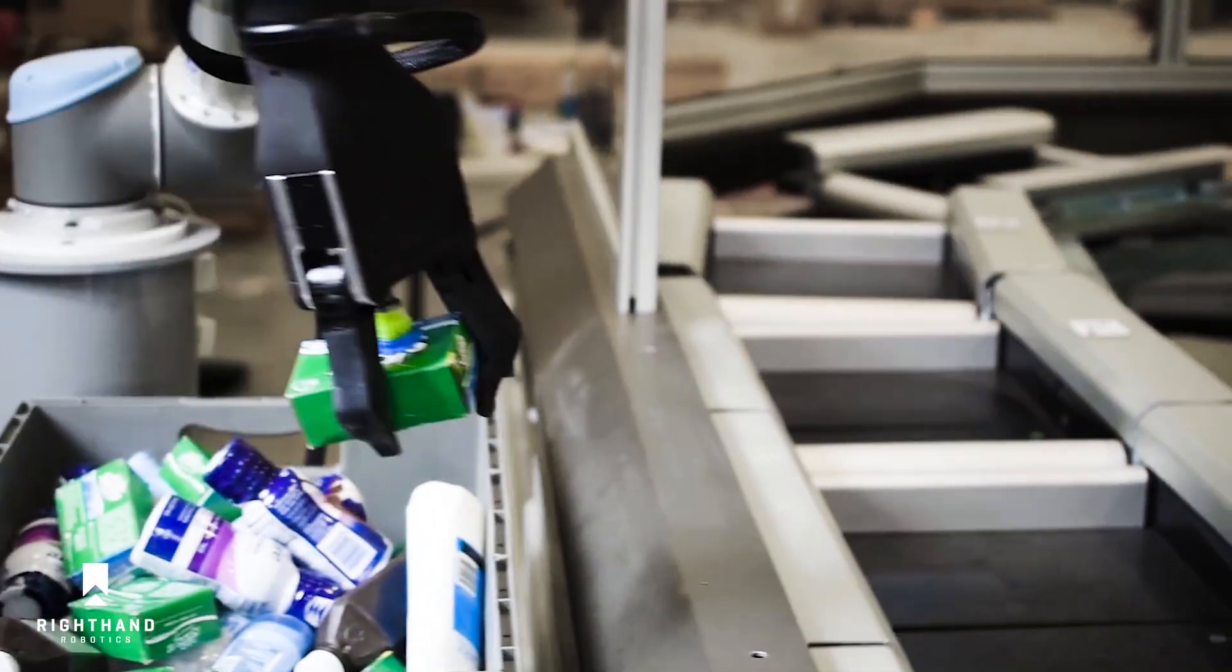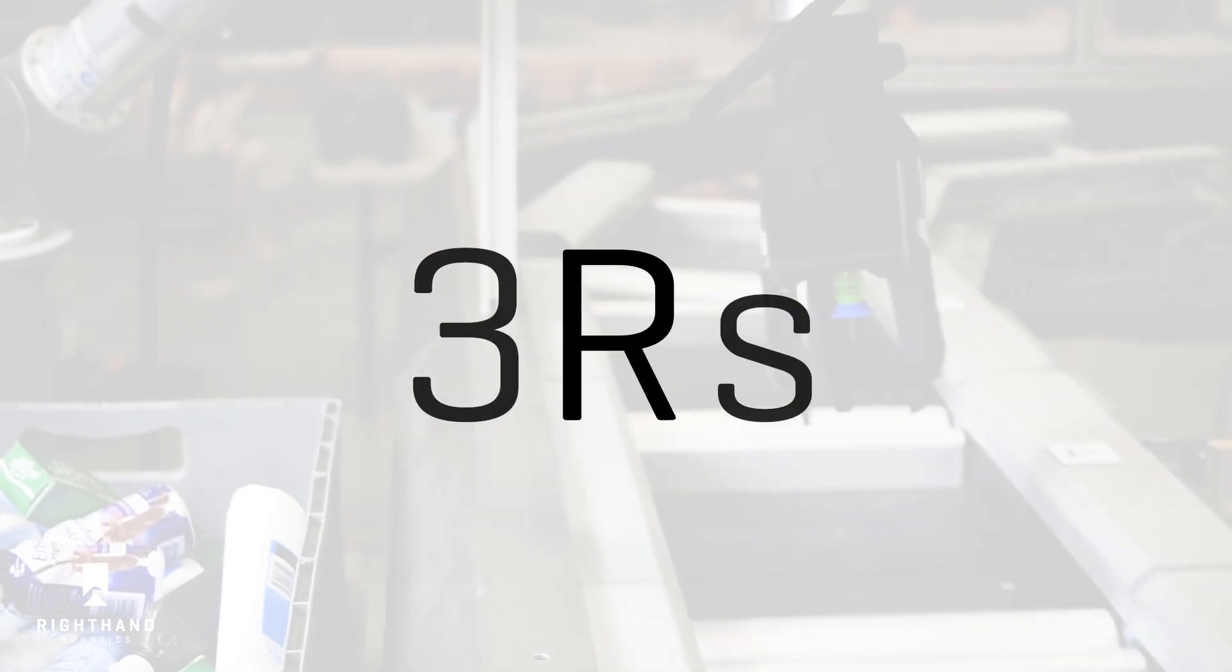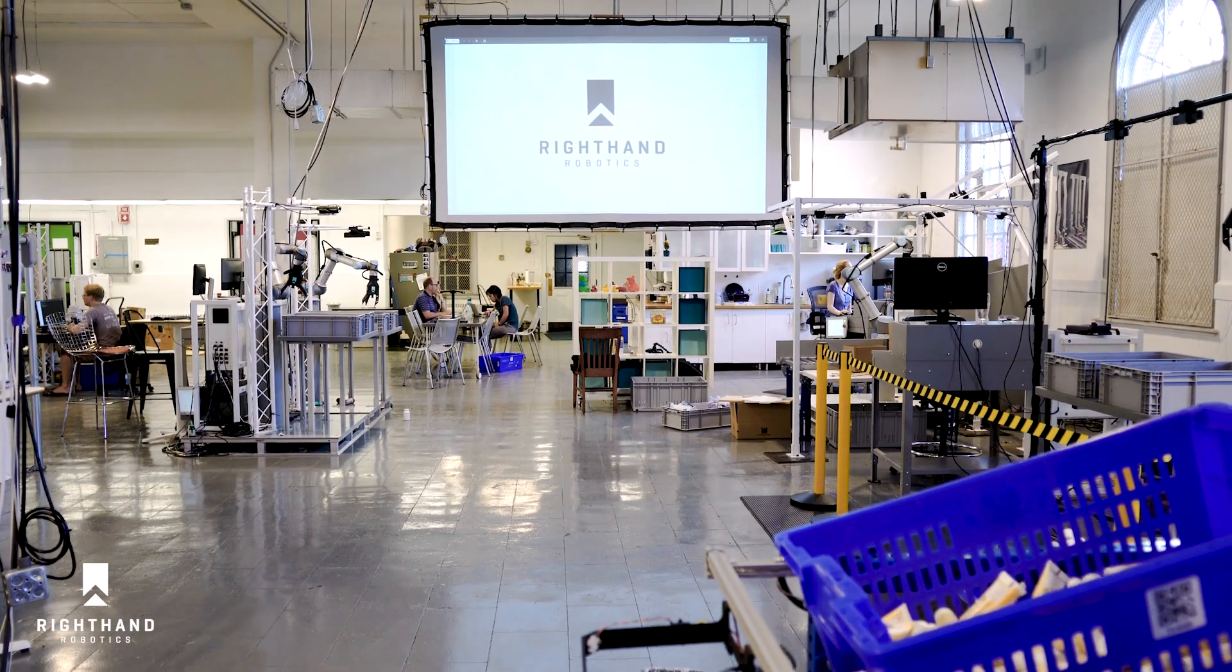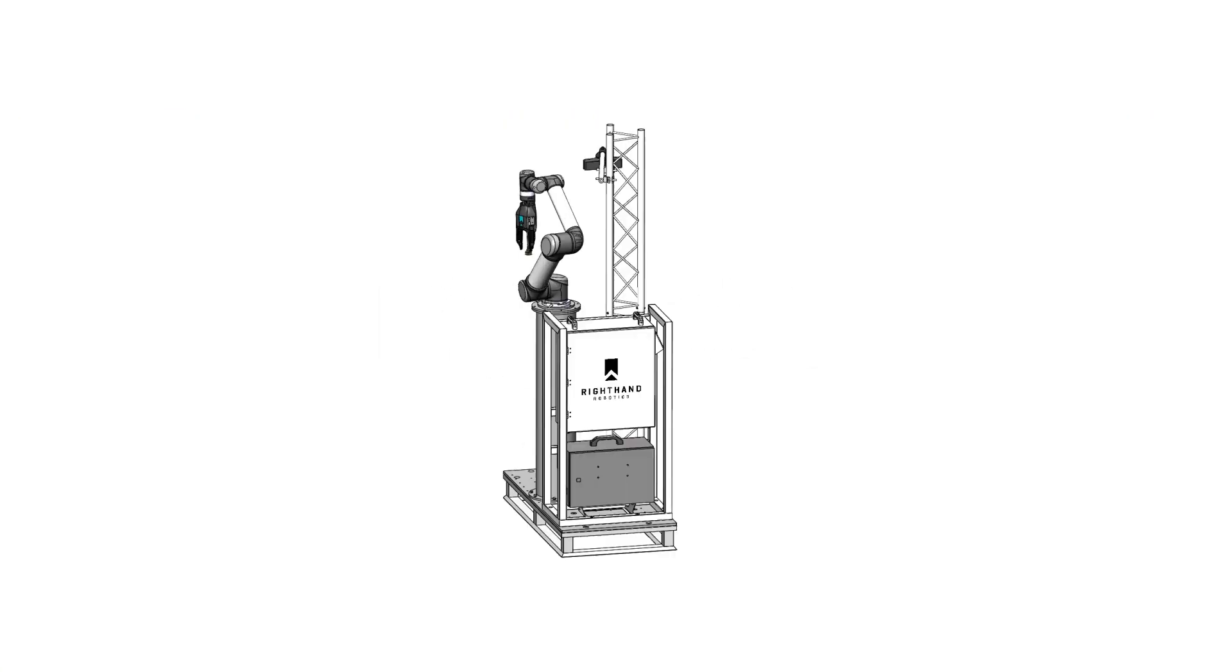Developing a machine with the intelligence and skills to pick a massive range of items at high rate and reliability, the 3Rs of robotic piece picking, is what drives us at RightHand Robotics. We call the solution RightPick, and here's how it works.